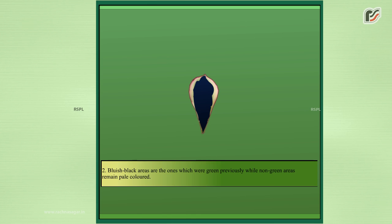Bluish black areas are the ones which are green previously while non-green areas remain pale colored.